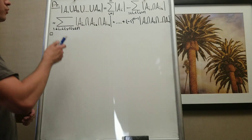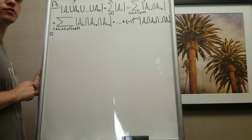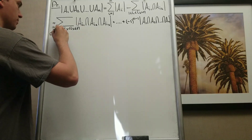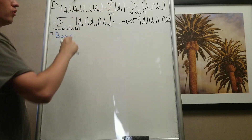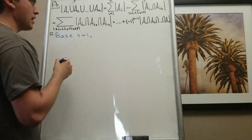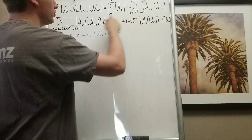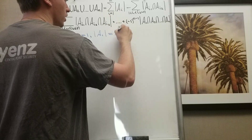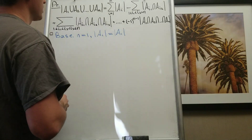Hello everyone. In this video I want to prove the inclusion-exclusion formula for n sets, and I'm going to prove this formula by induction. Induction consists of two steps. Step number one: I want to prove the base of my induction. The base says this formula is true for every natural n, so the smallest n is when n equals 1. When n equals 1, the left-hand side gives A₁, and the right-hand side also gives only A₁ since all other terms require n greater than 1. So the base is true.